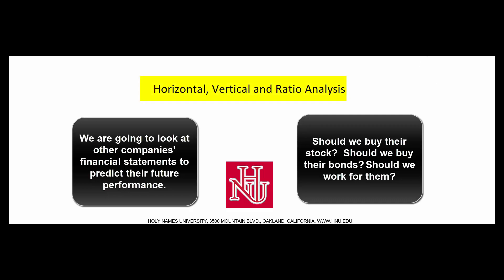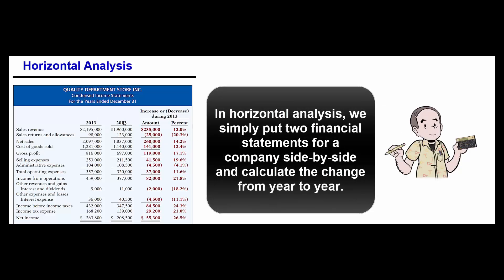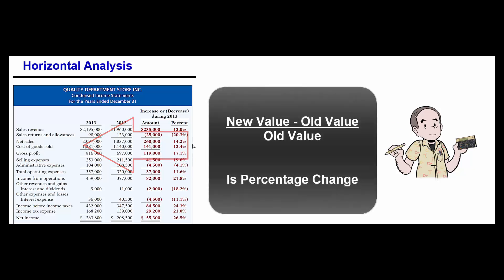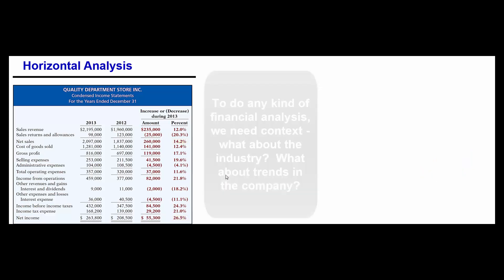There are three different kinds of analysis that our book talks about: horizontal, vertical, and ratio analysis. Horizontal analysis means putting two comparative income statements or balance sheets next to each other and looking at the change from year to year. You take new net sales minus old net sales divided by old net sales — in this example, a 14.2% increase in sales and income up 26.5%.